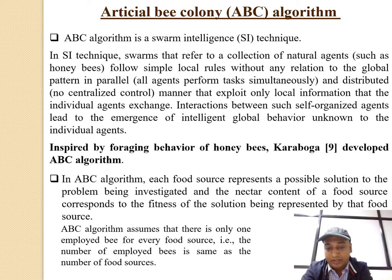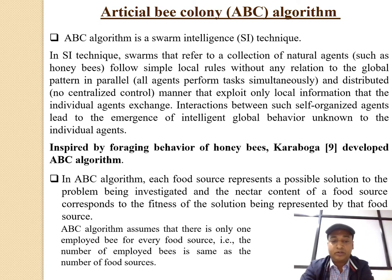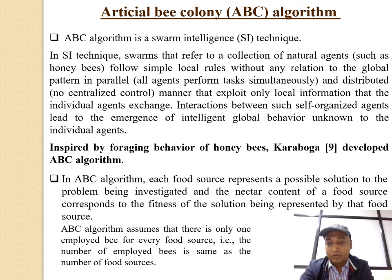ABC assumes that there is only one employed bee for every food source, meaning the number of employed bees equals the number of food sources. The number of employed bees constitutes the employed bee population, and similarly the number of onlooker bees constitutes the onlooker bee population.